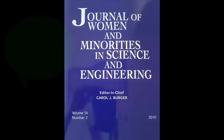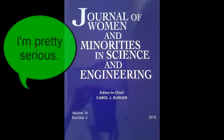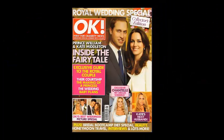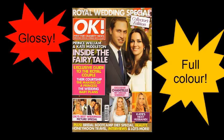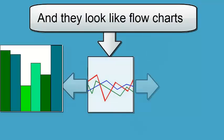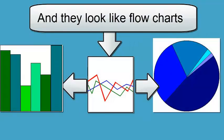Scholarly articles come from journals, and they're usually pretty serious and direct. Popular articles come from magazines and newspapers with glossy, full-color pages and high-impact images. Scholarly articles might have a few images, but they'll be specific to that subject.